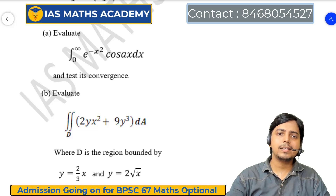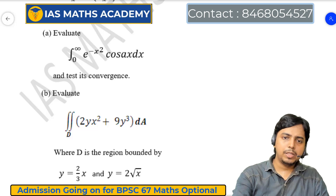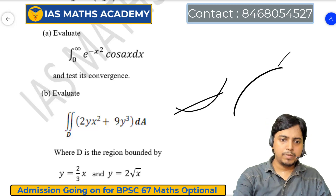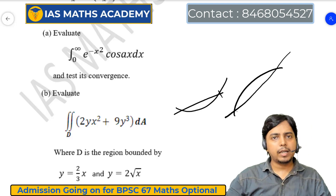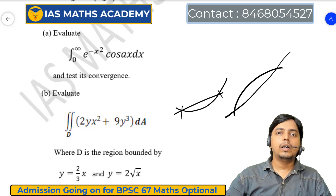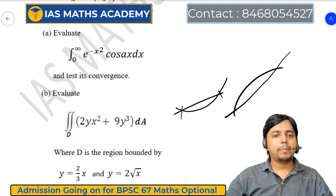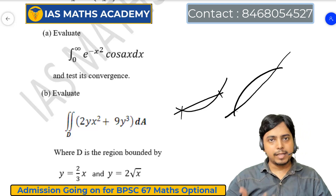Question number 3B में: evaluate the double integral over the region bounded between the line y = (2/3)x और y = 2√x। मतलब एक parabola और एक line है। Line और parabola के बीच का region निकालकर दो intersection points find करोगे और वहाँ से integrate करोगे, तो बहुत ही आसान question है। Vector calculus में इतना आसान question हम लोग expect नहीं करते — यह तो class 11-12 का ही question है, इसमें कोई graduation का concept use नहीं हो रहा।